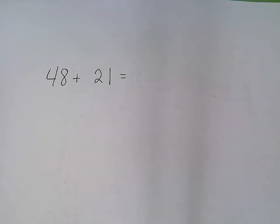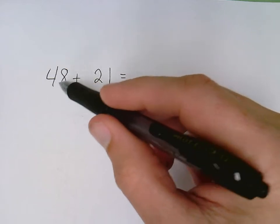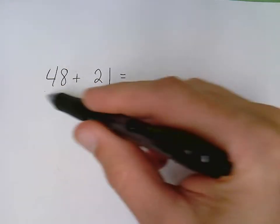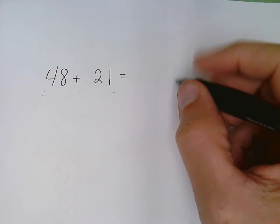We are going to work on adding two-digit numbers. The first thing that I need to do is I need to change these from horizontal to vertical, so I need to line them up by their place values.